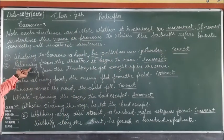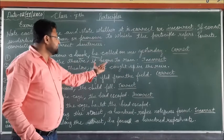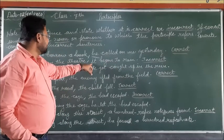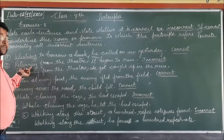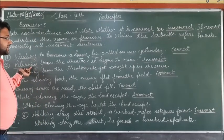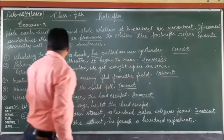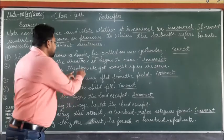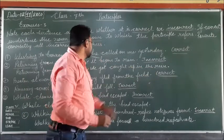Second sentence: 'Returning from the teacher, it began to rain.' Here 'returning' is the participle, but there is no noun or pronoun to which this participle refers. So it is an incorrect sentence. The correct sentence will be: 'Returning from the teacher, we got caught in the rain.'